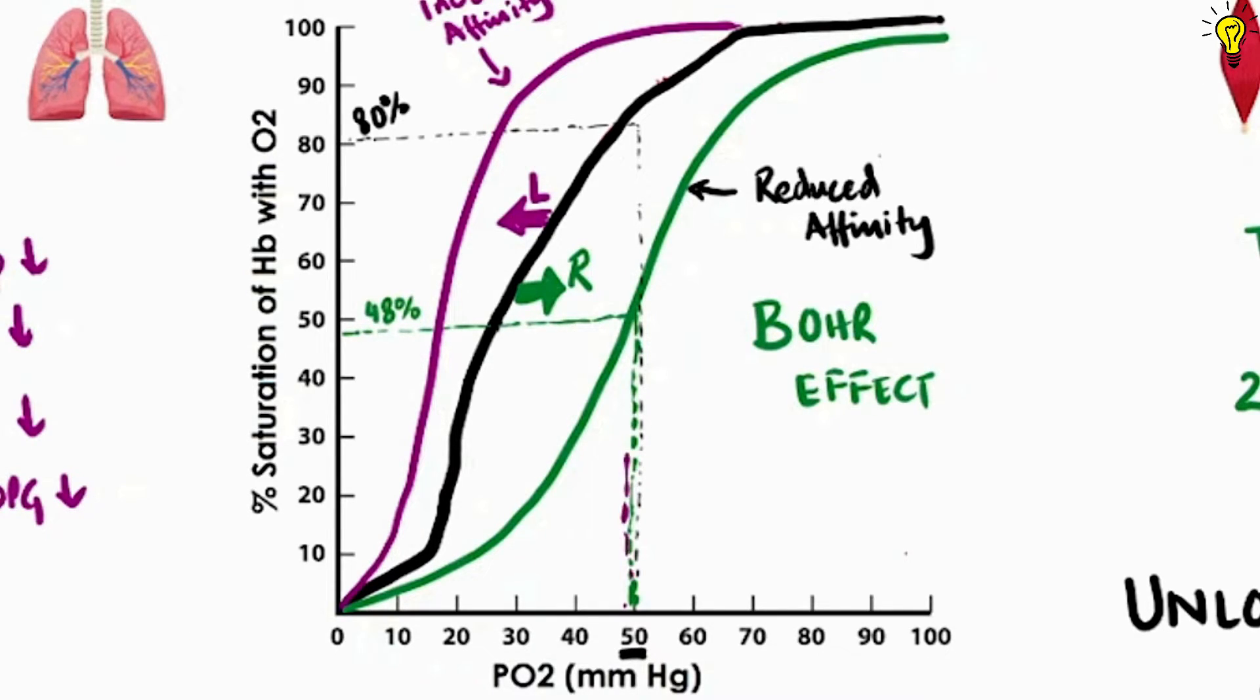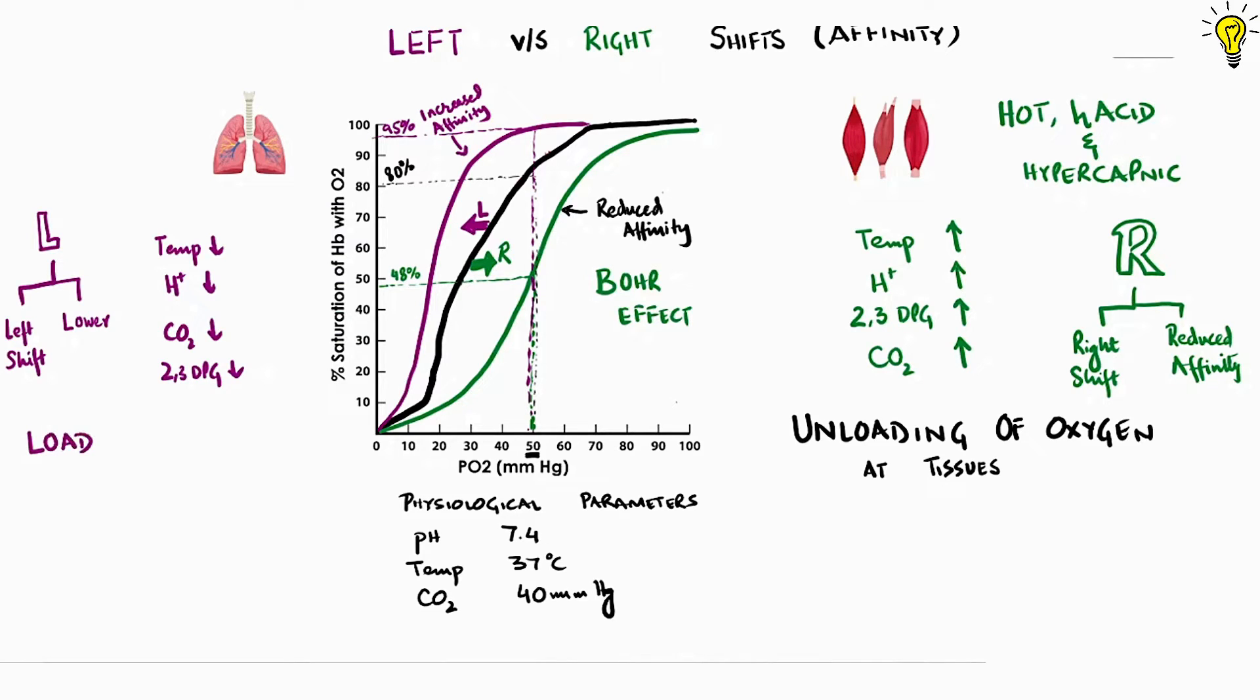So for the same PO2 levels of 50 mmHg in left shift, marked in purple, hemoglobin becomes almost 95% saturated. Very high compared to the right shift curve, right? This is the basis for oxygen loading in lungs. So L for left, L for lower and L for loading of oxygen in lungs. Remember that.